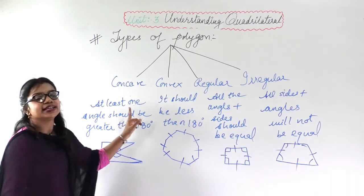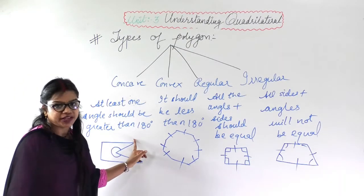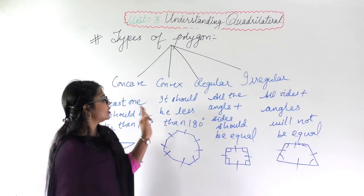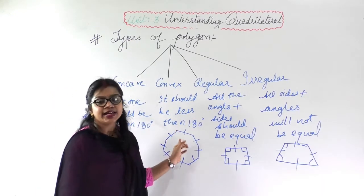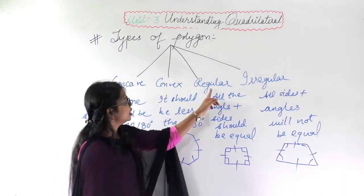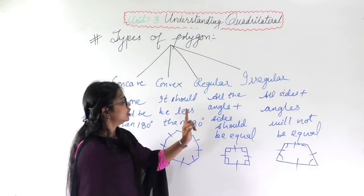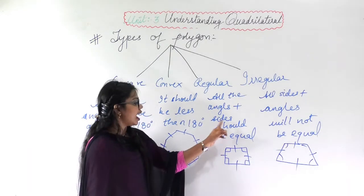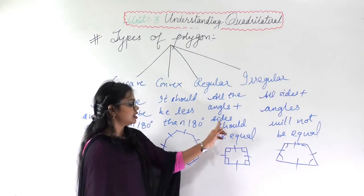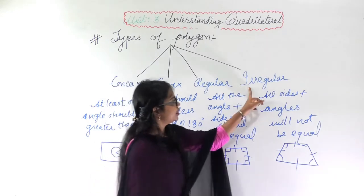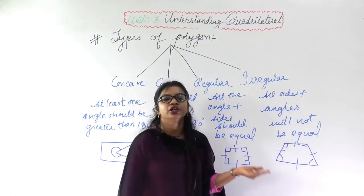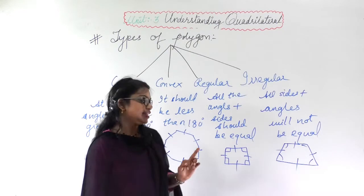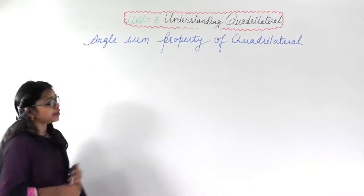So the types of polygon: in concave, at least one angle should be greater than 180 degrees; in convex, all angles should be less than 180 degrees; in regular, all angles and sides should be equal; and in irregular, all sides and angles will not be equal.